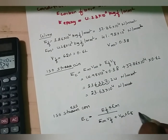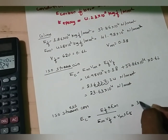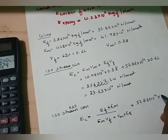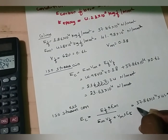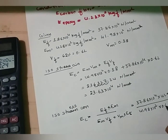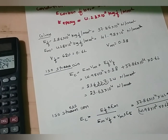Substituting: Ef = 37.86 × 10⁴, Em = 41.98 × 10², divided by Em × Vf = 41.98 × 10² × 0.62, plus Vm × Ef = 0.38 × 37.86 × 10⁴.